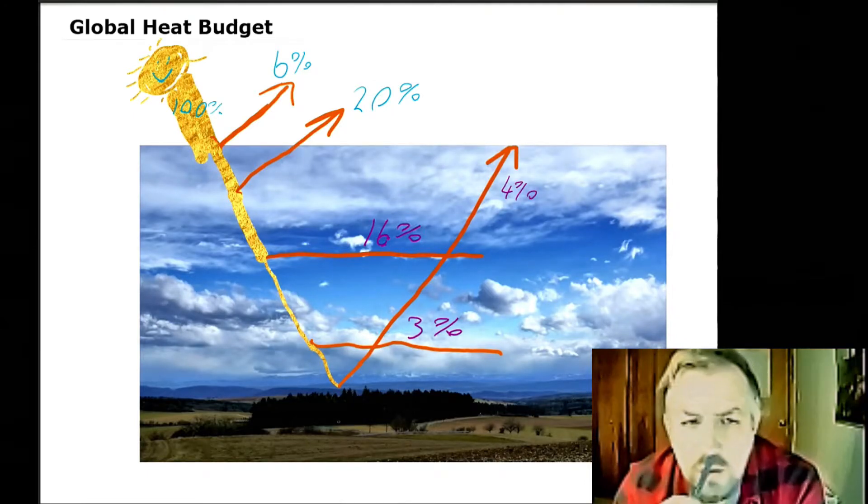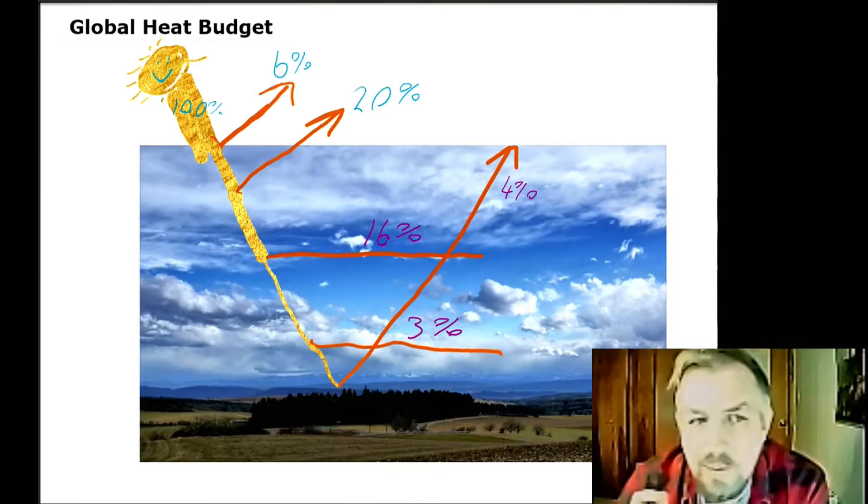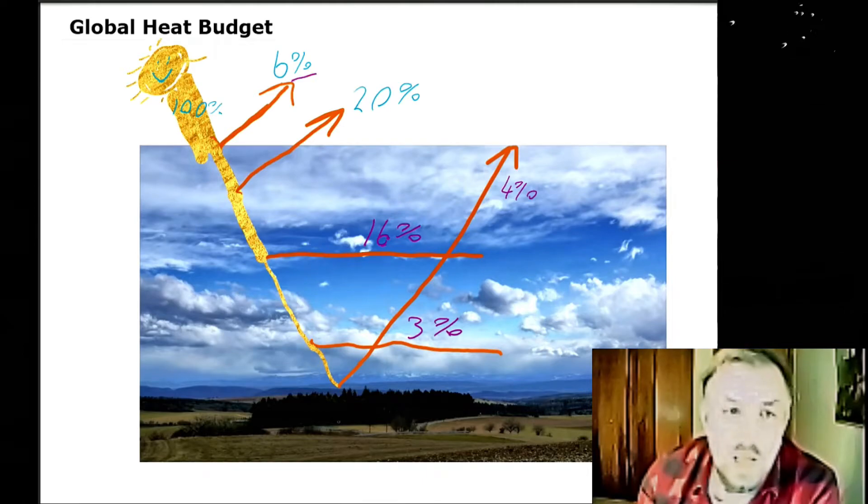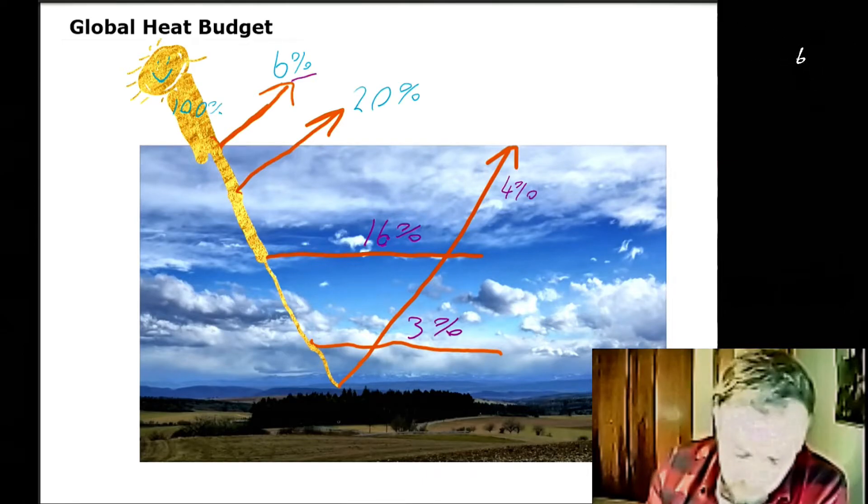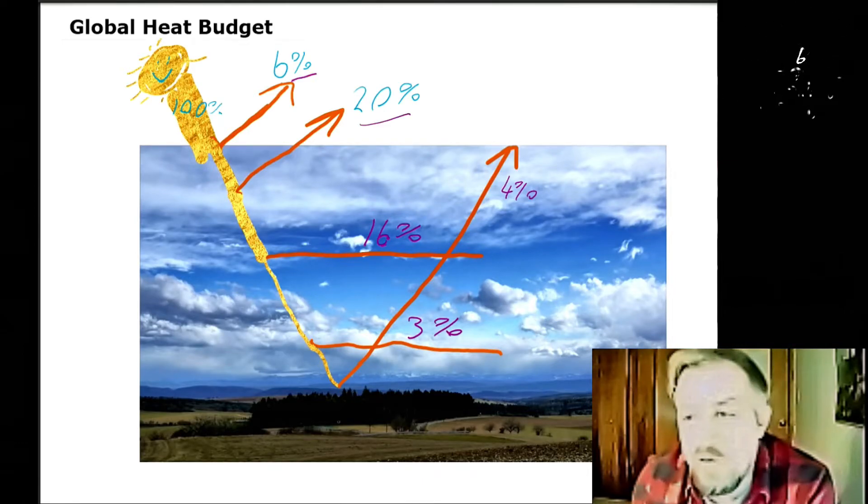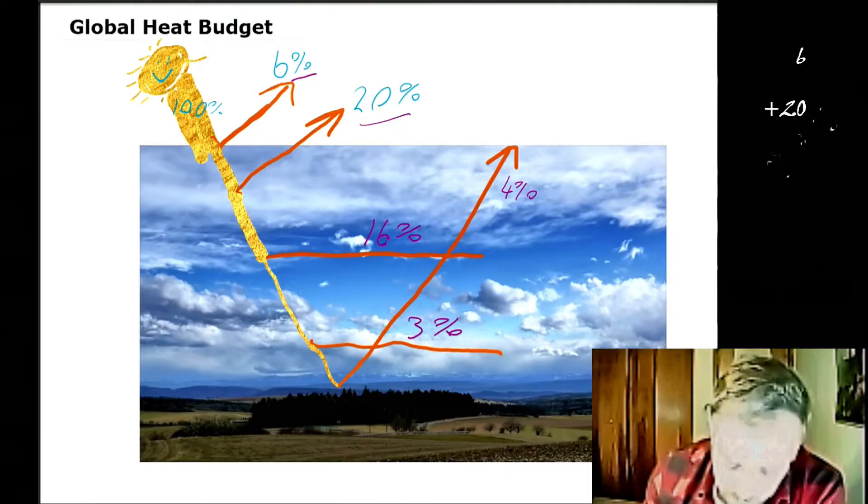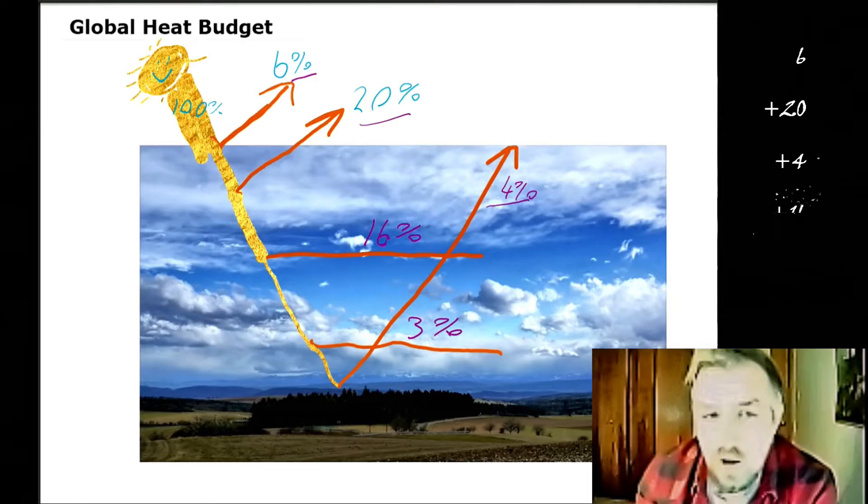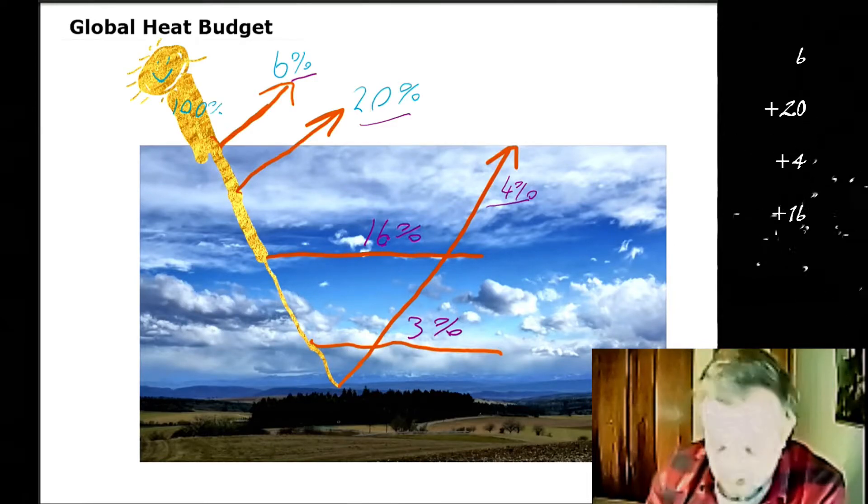So do we have 49%? Let's do a quick check. 6% reflected by the atmosphere, 20% reflected by clouds, and 4% reflected by the surface of the earth gives us 30%. Not too bad so far.